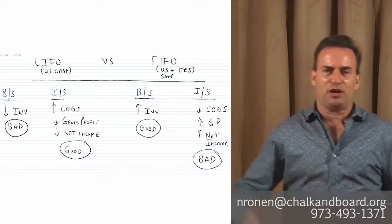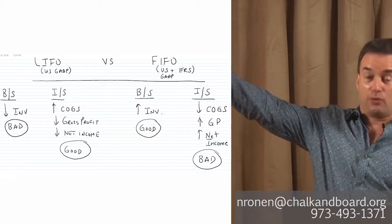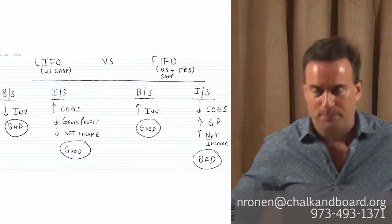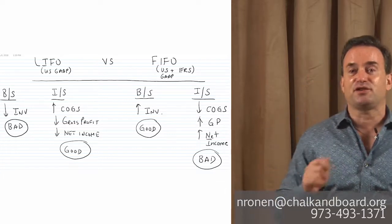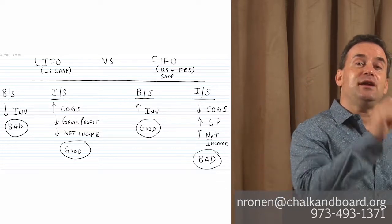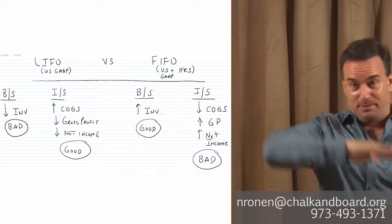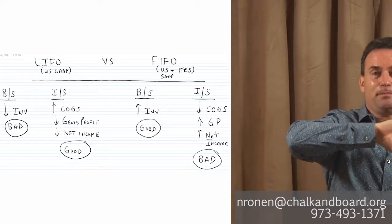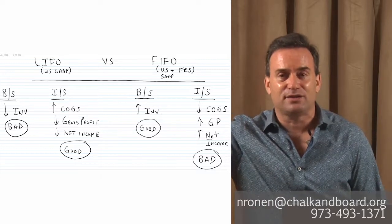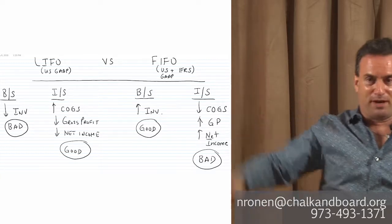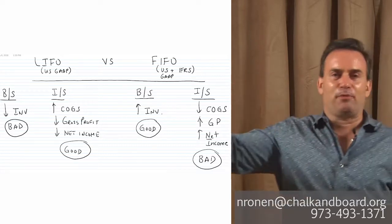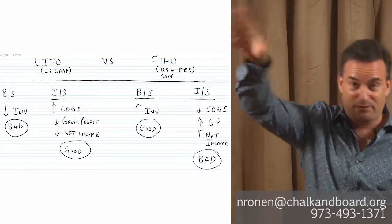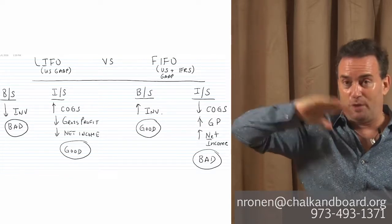So let's focus on the inflationary environment, because that's generally the way we have it in the real world. Prices are rising from one period to the next and the way that most of the time they're going to ask the questions on the level one exam. LIFO last in first out says what? My most recently purchased items with my higher prices because prices are rising will be sold first. So because they're being sold first, those most recently purchased items with the higher prices are going to hit the income statement as cost of goods sold. If I'm using my higher priced items, my cost of goods sold will be higher than if I were to use FIFO. My cost of goods sold on my income statement will be higher.